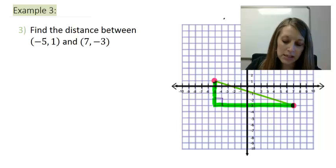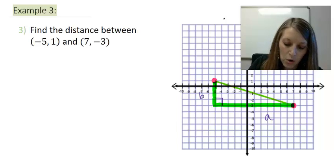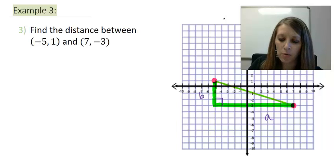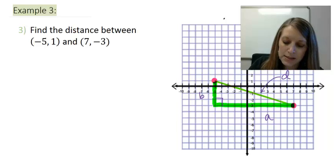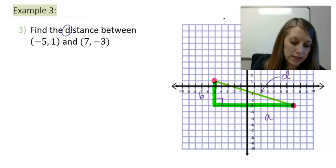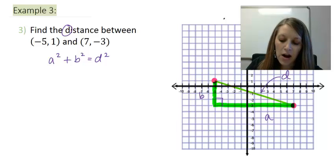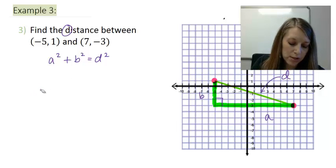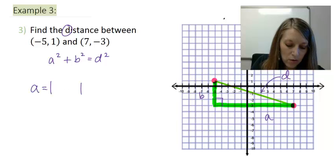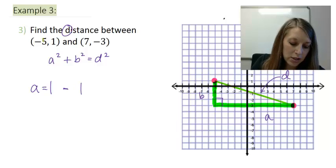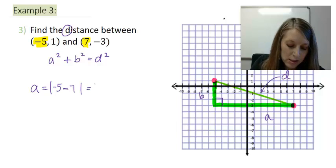The first thing I need to do is label the sides of my triangle. I'm going to label my horizontal one A, my vertical one B, and my hypotenuse, which I'll label as D for distance. So Pythagorean's Theorem is A squared plus B squared equals D squared. To find A, I use the absolute value of the difference between my two x values, negative 5 and 7. Negative 5 minus 7 gives me the absolute value of negative 12, which simplifies to be 12.